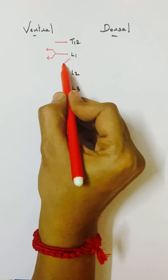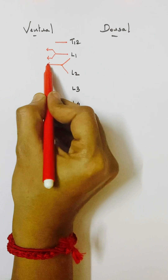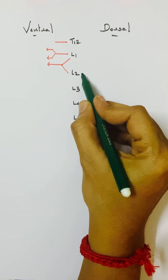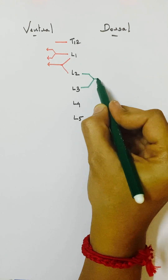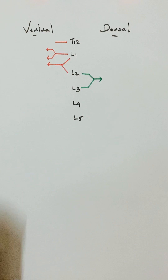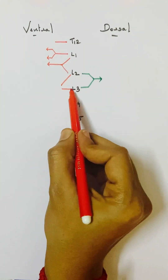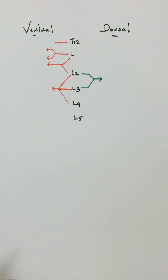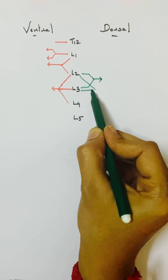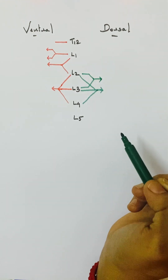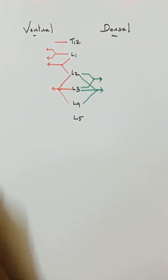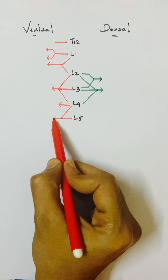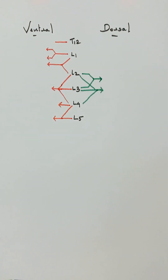From L1 and L2 we have a branch on the ventral side. From L2 and L3 there is a branch which goes dorsally. From L2, L3, and L4 there is a branch both ventrally and dorsally. From L4 alone there is a branch on the ventral side, and L4 and L5 join to form a trunk.